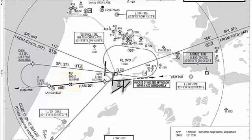After reaching our final approach fix at 18.9 DME from Pampas VOR, we will start our descent to our missed approach point, that is 14.2 DME from Pampas VOR. Let's see the profile view of our flight plan.